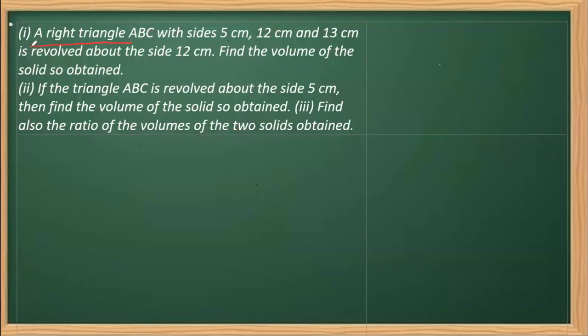In this question, a right angle triangle ABC with sides 5 cm, 12 cm and 13 cm, 13 being the hypotenuse, is revolved about the side 12 cm. The axis of rotation is 12, and we have to find the volume of the solid so obtained.